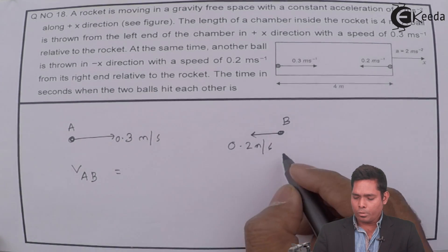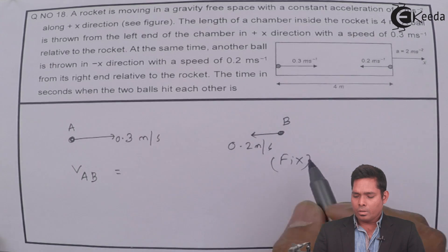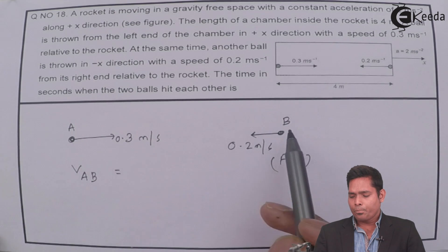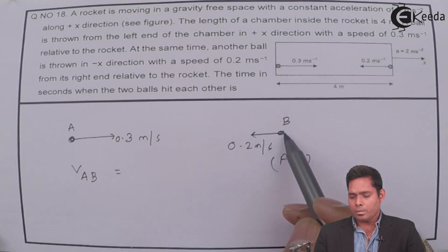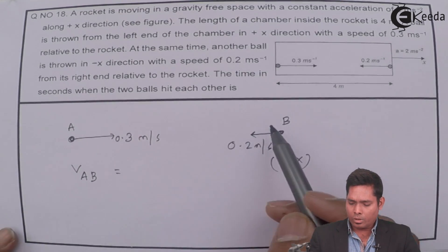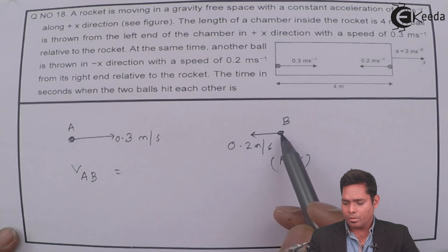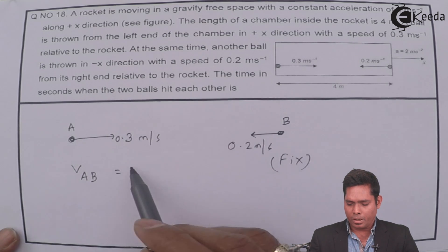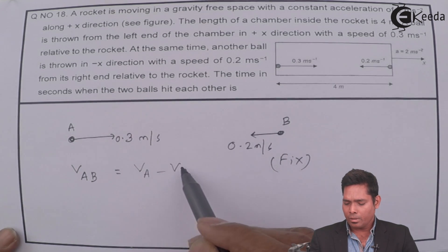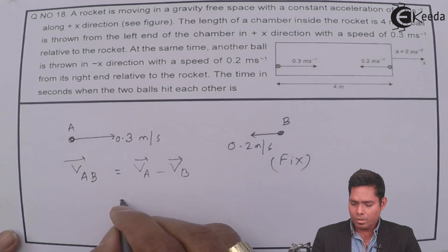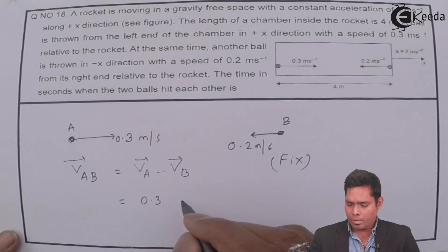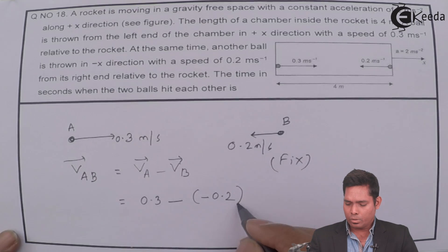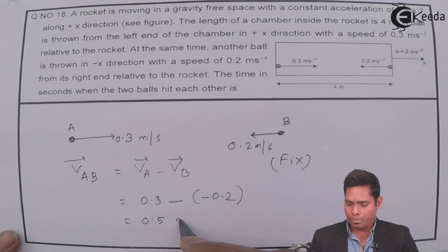Velocity of A with respect to B equals velocity of A minus velocity of B. Velocity of A is 0.3, minus velocity of B which is minus 0.2 (since it moves left). So this becomes 0.5 meter per second.